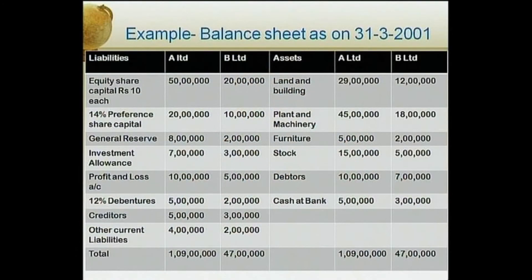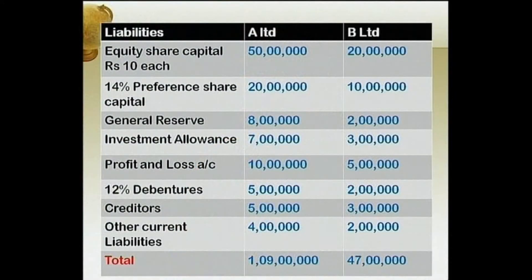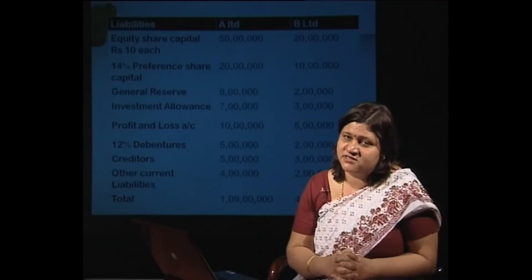We will now take up a practical example to understand how purchase consideration is computed and entries are passed. The balance sheet as on 31st March 2001 shows liabilities and assets for both A Limited and B Limited. Equity share capital of Rs. 10 each: A Limited Rs. 50 lakh, B Limited Rs. 20 lakh. 14% preference capital: A Limited Rs. 20 lakh, B Limited Rs. 10 lakh. General reserves: Rs. 8 lakh and Rs. 2 lakh. Investment allowance reserve (statutory): A Limited Rs. 7 lakh, B Limited Rs. 3 lakh. B Limited is the transferor, transferring its assets and liabilities to A Limited.